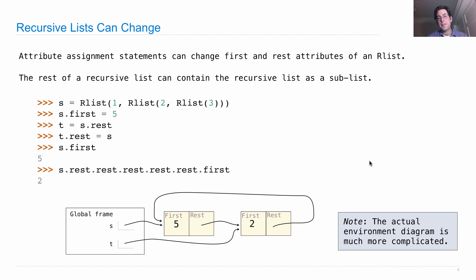A recursive list that has a cycle in it is no longer a well-formed sequence, because it doesn't have a finite length. But it is a well-formed recursive list, because it has a first element, and the rest of each node is another recursive list.